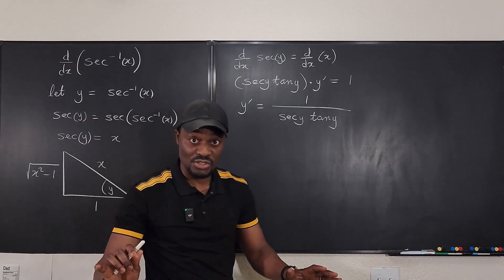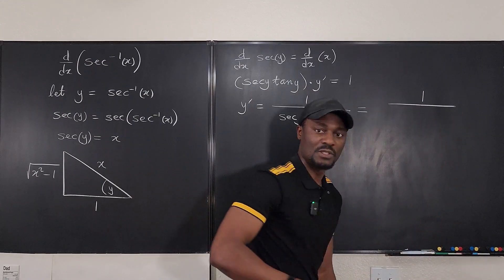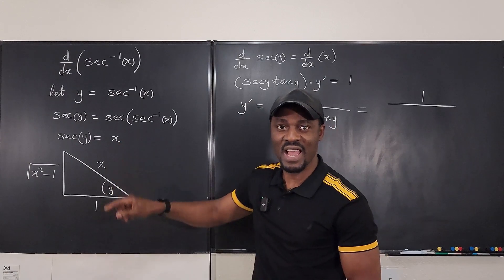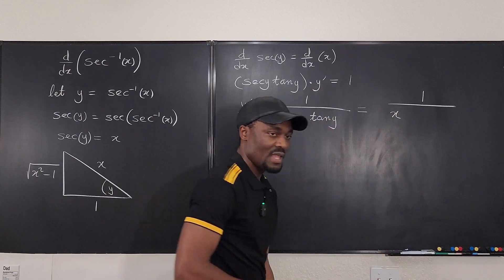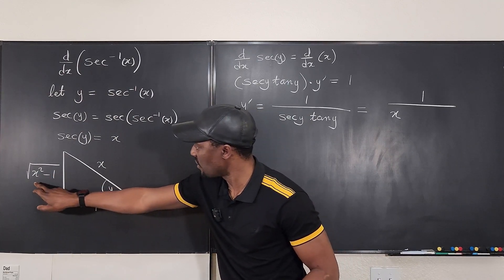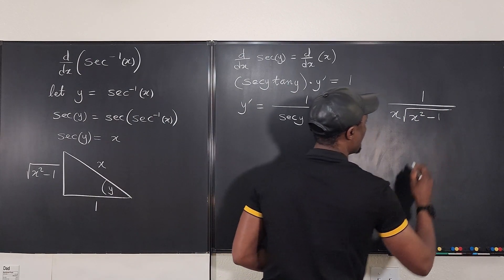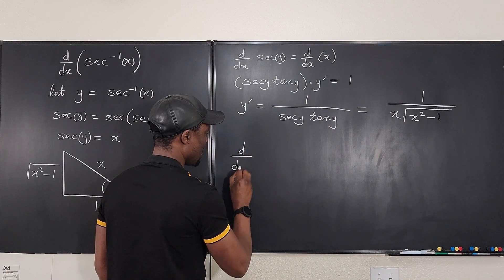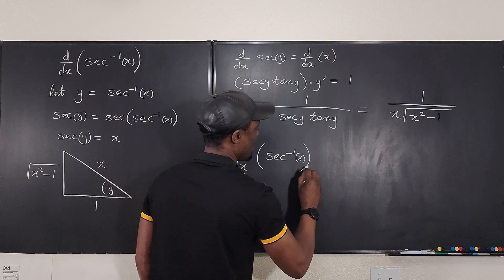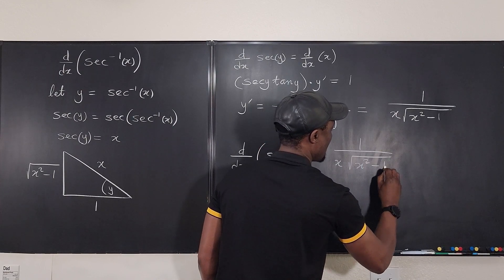Now we substitute using our triangle. Secant y equals x, and tangent is opposite over adjacent, so tan y equals the square root of x squared minus one. Therefore, we can conclude that the derivative d/dx of inverse secant of x equals one over x times the square root of x squared minus one.